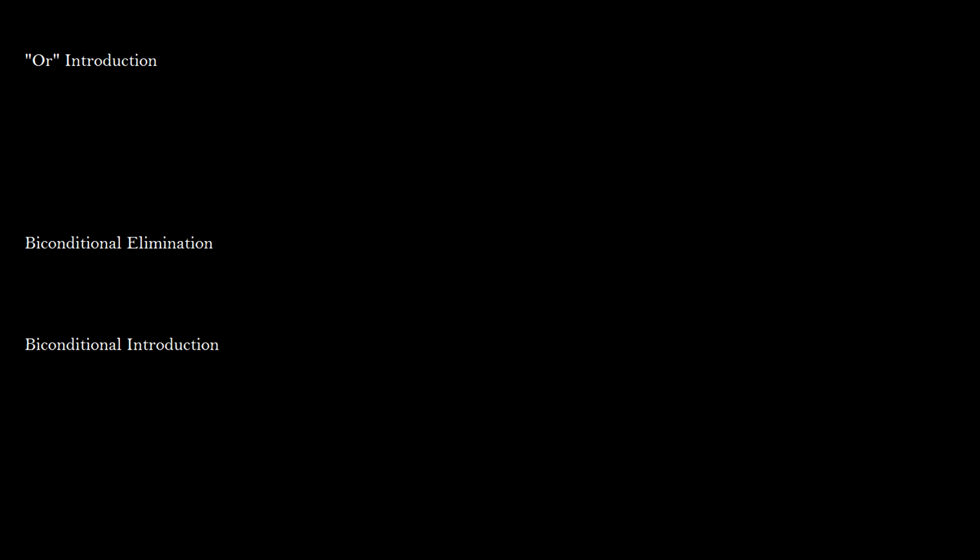And finally, some last rules we're going to do today is or introduction. If you have on line I some statement P, then on line J, you can write P or anything. And this comes from I and this is or introduction. Or elimination is very difficult, so we're not going to do it in this video. But if you take a look at this, this line says that P is true. So we know that disjunctions are true if at least one of its disjuncts are true. So P is going to be true. So this sentence is also going to be true, no matter what you put there. So it's totally acceptable.